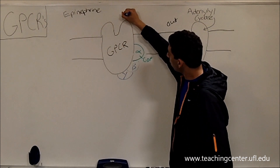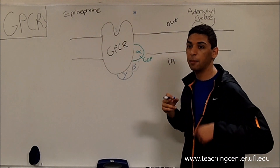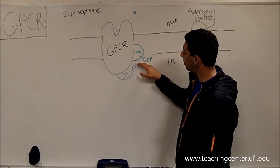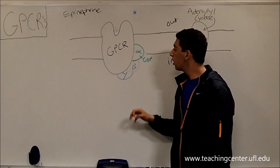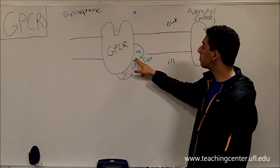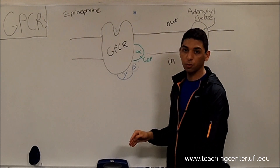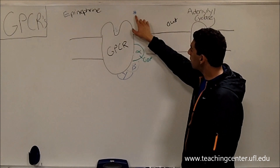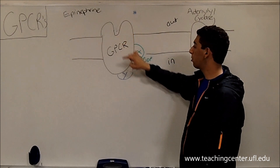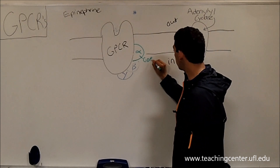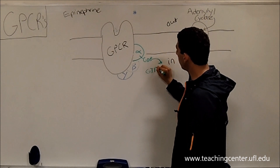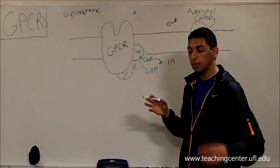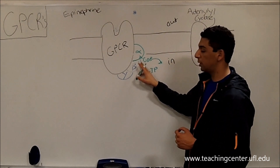Let's say we have a molecule of epinephrine. It would come in and bind to the G-protein-coupled receptor in whichever cell it's targeting. On this receptor, you have three subunits: an alpha subunit, a beta subunit, and a gamma subunit. The alpha subunit is drawn in a special color because it does most of the work. It currently has a GDP attached to it. Once the epinephrine binds to the receptor, the GDP leaves and is replaced with a GTP — the entire GDP molecule leaves and is replaced by an entirely new GTP molecule.